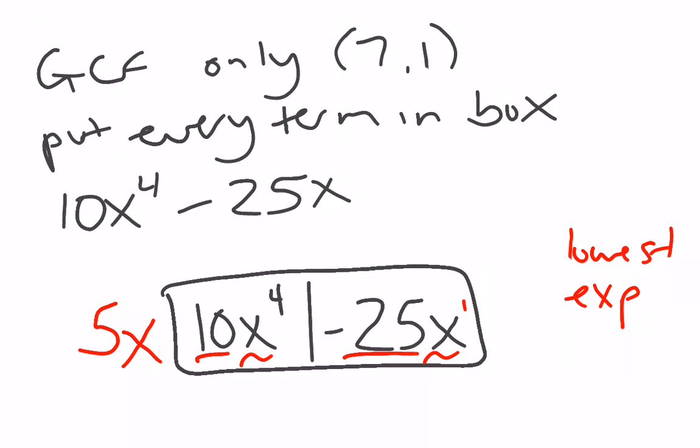And then I think in terms of multiplication. What times 5 is 10? 2. What times x to the 1st power is x to the 4th? x cubed. All we did is subtract 4 minus 1 gives me 3. Then negative 5 times 5 will give me 25, and I already have my x to the 1st power.